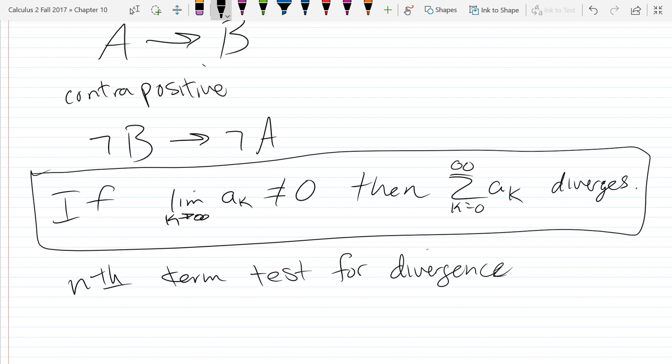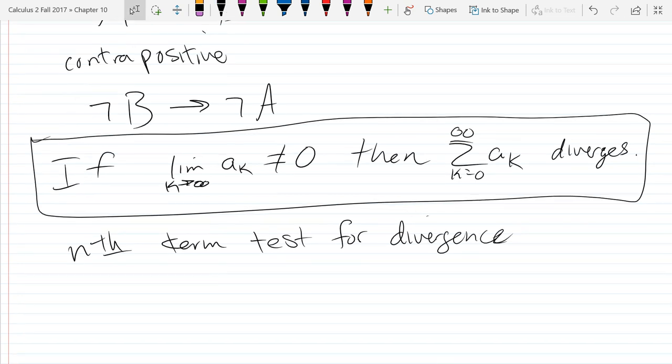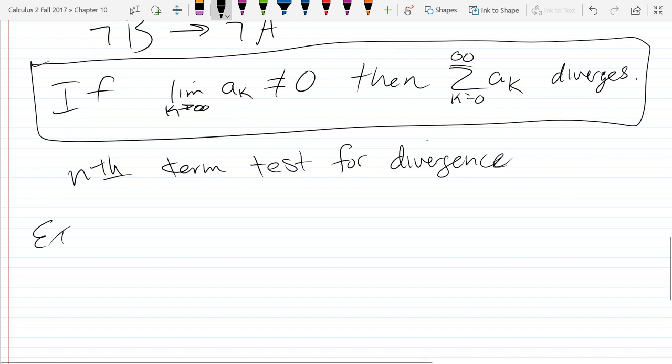It just says if your terms don't get small, your sequence has to diverge. So these example problems, you're going to prove divergence.